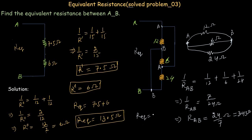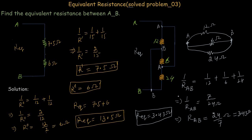The equivalent resistance between point A and B is 3.43 ohms. That's all for today's presentation. If you have any doubts, ask in the comment section — see you in the next one.